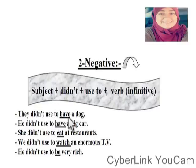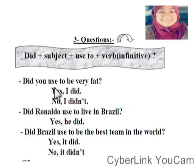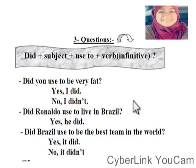They didn't use to have a dog. For the negative form: subject + didn't use to + verb infinitive. For questions: Did + subject + use to + verb infinitive? For example: Did you use to be very fat? Yes, I did. Or: No, I didn't. So in the negative: didn't use to + verb infinitive. In questions: used to + verb in infinitive form.